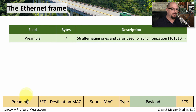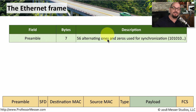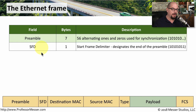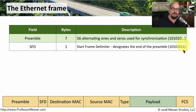The preamble is an alternating number of ones and zeros. This is the way that the receiving workstation knows that the rest of the information about to arrive is part of an ethernet frame. Then we have a start frame delimiter, which is a very specific set of ones and zeros: 10101011. That means everything after this point is going to be related to this ethernet communication.